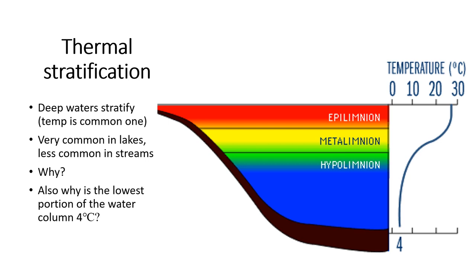Waters also stratify. Temperature increases at the surface faster than at the bottom — sunlight entering the water tends to warm the surface because it's absorbed at the top and doesn't distribute evenly throughout the water column. In small, well-mixed streams, this has minimal impact on running water. But in small pools that are cut off, there will be an obvious warm surface and a cooler bottom, which you can feel just by sticking your foot in.